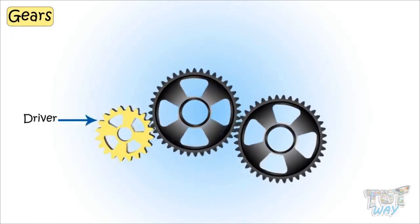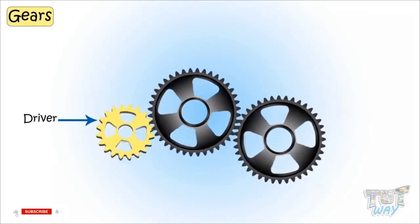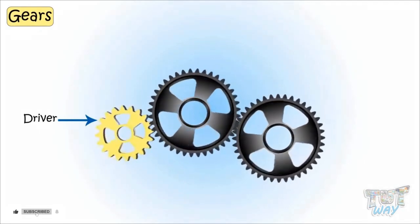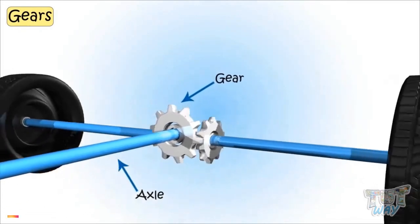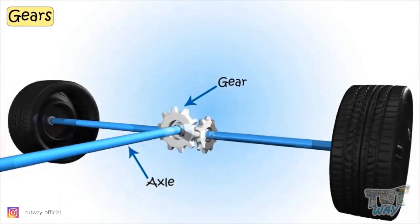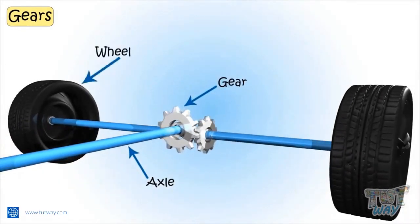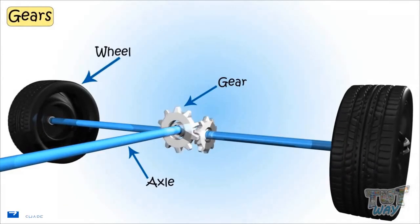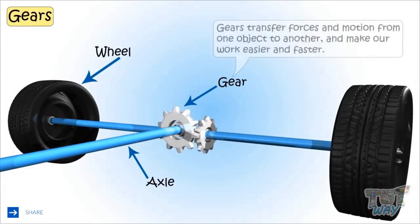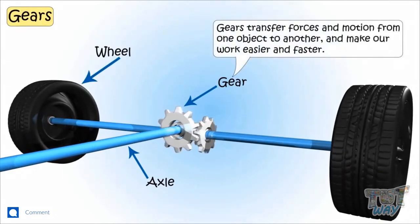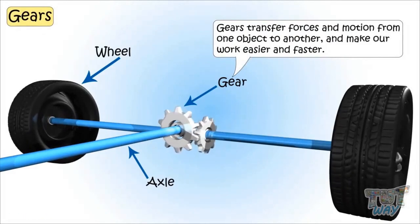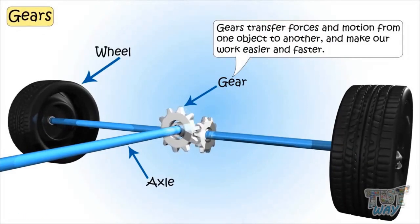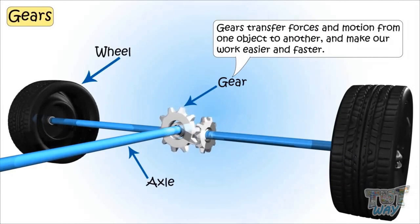The driver is the first gear that starts the movement. Gears turn on the axle, which in turn turns the wheel of the object to be moved. So gears transfer forces and motion from one object to another, making our work easier and faster.